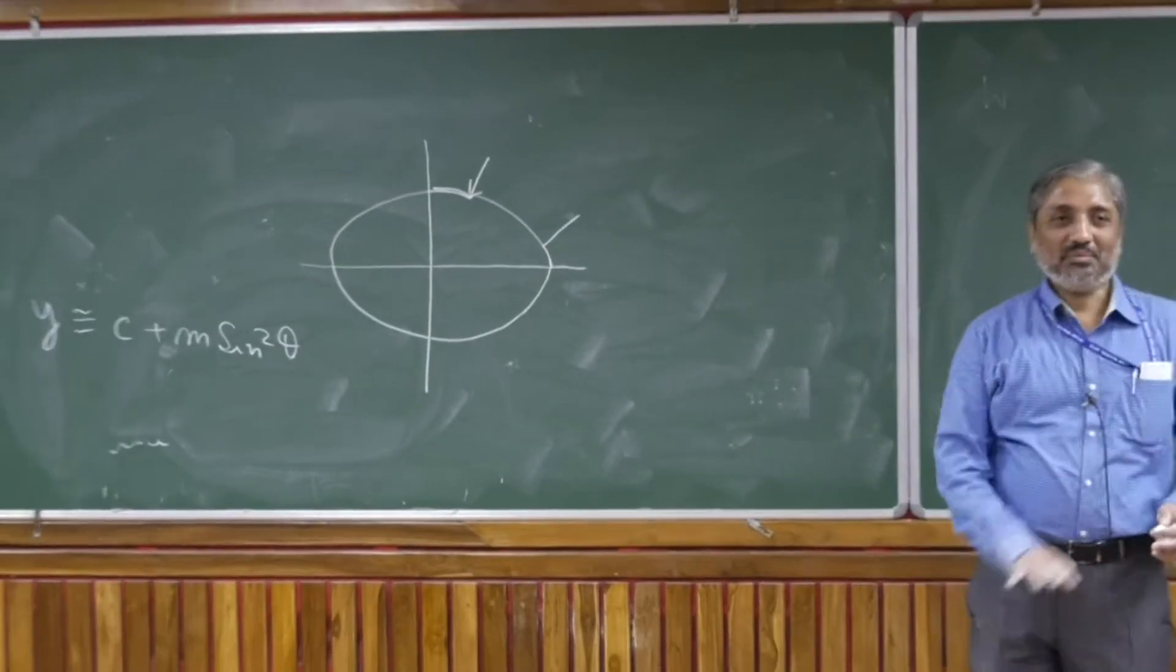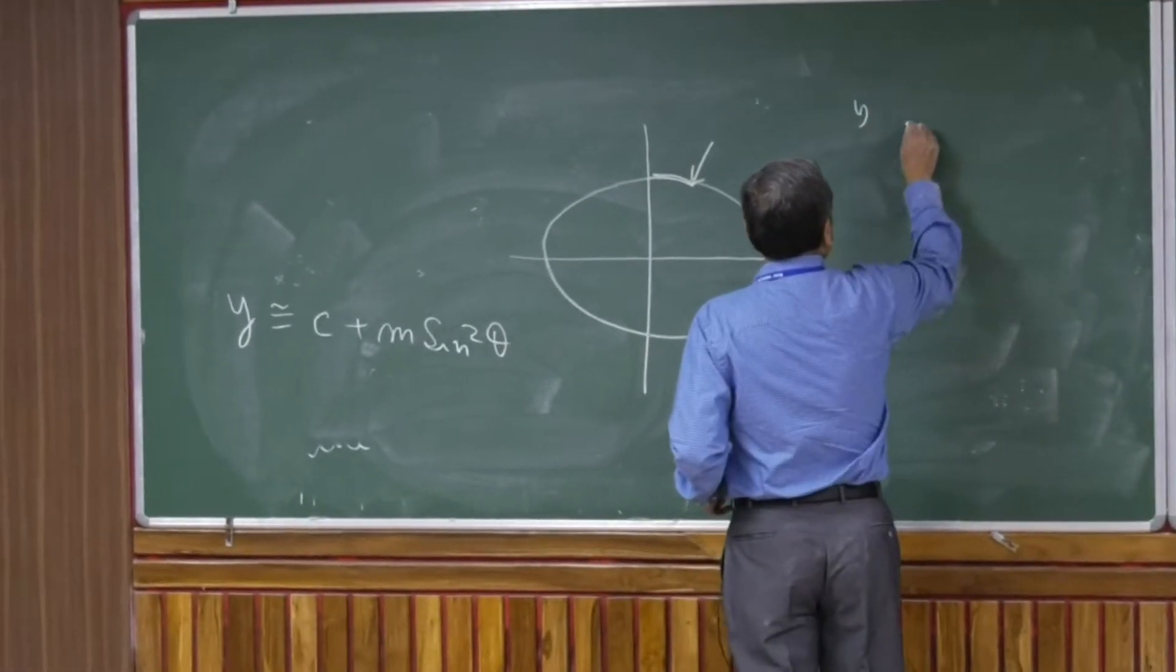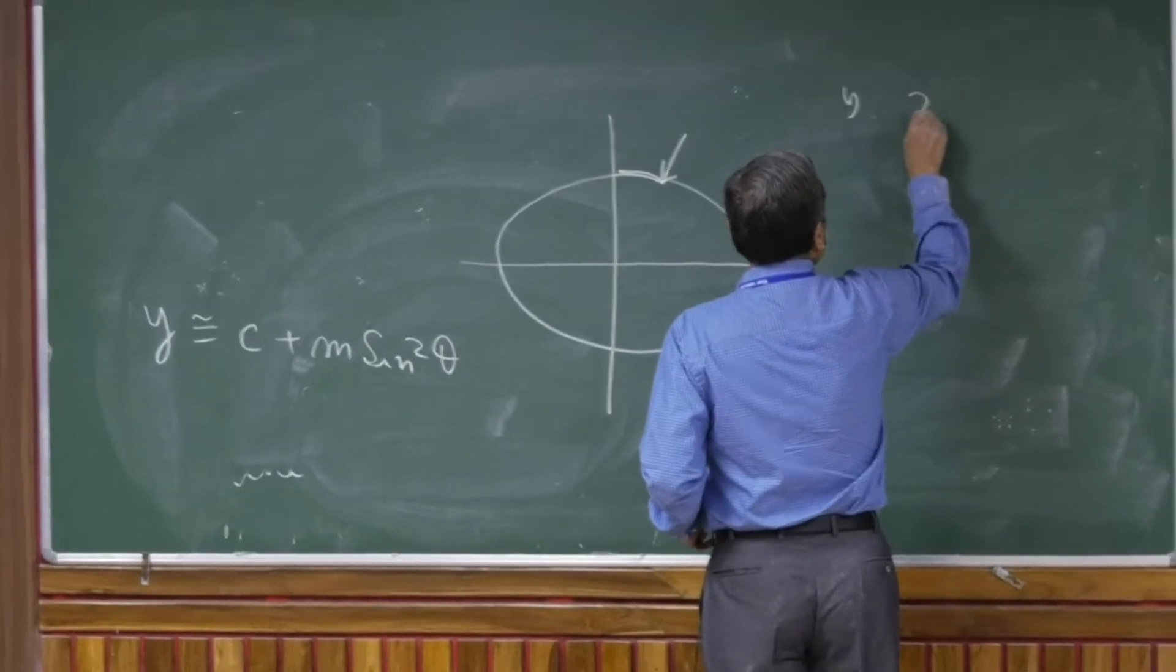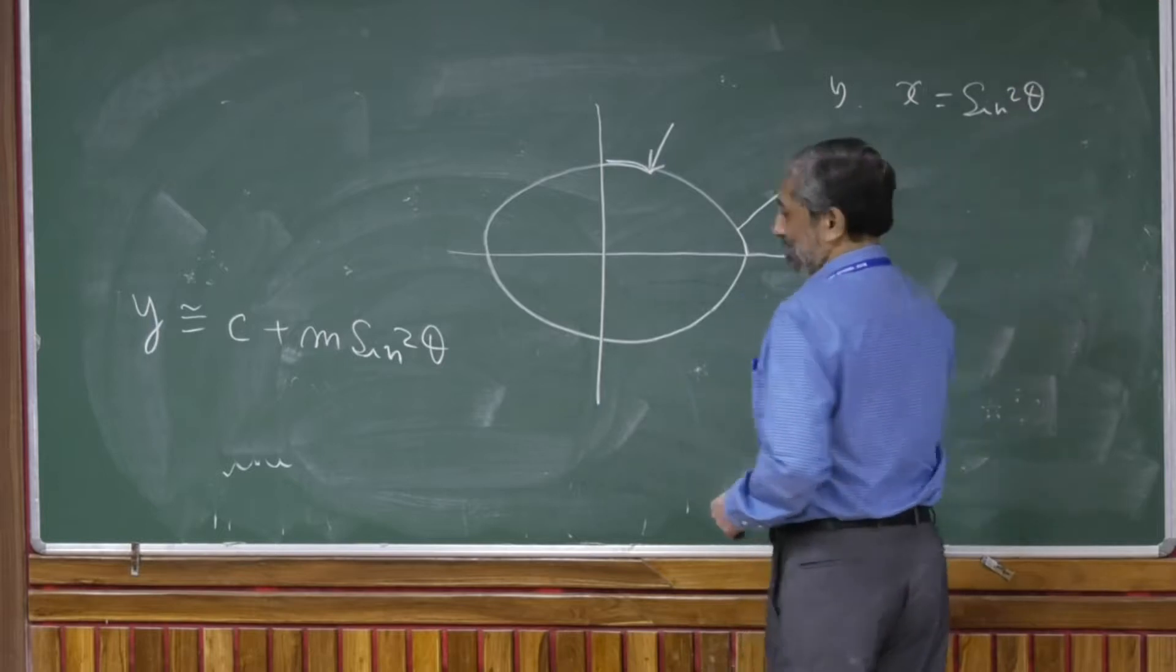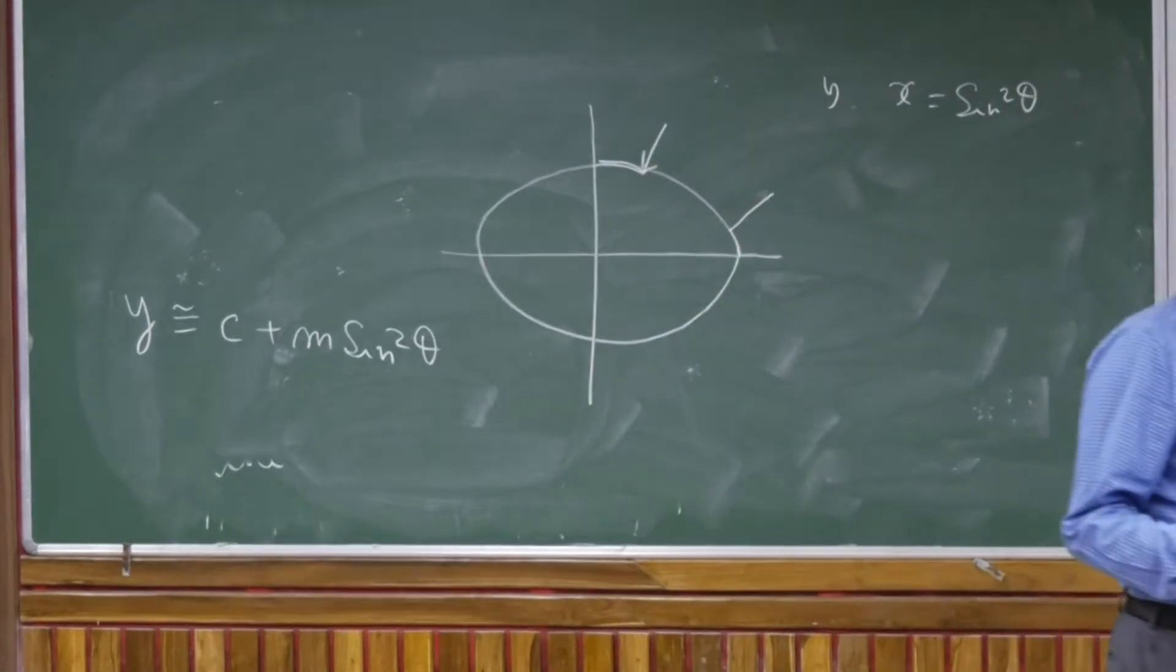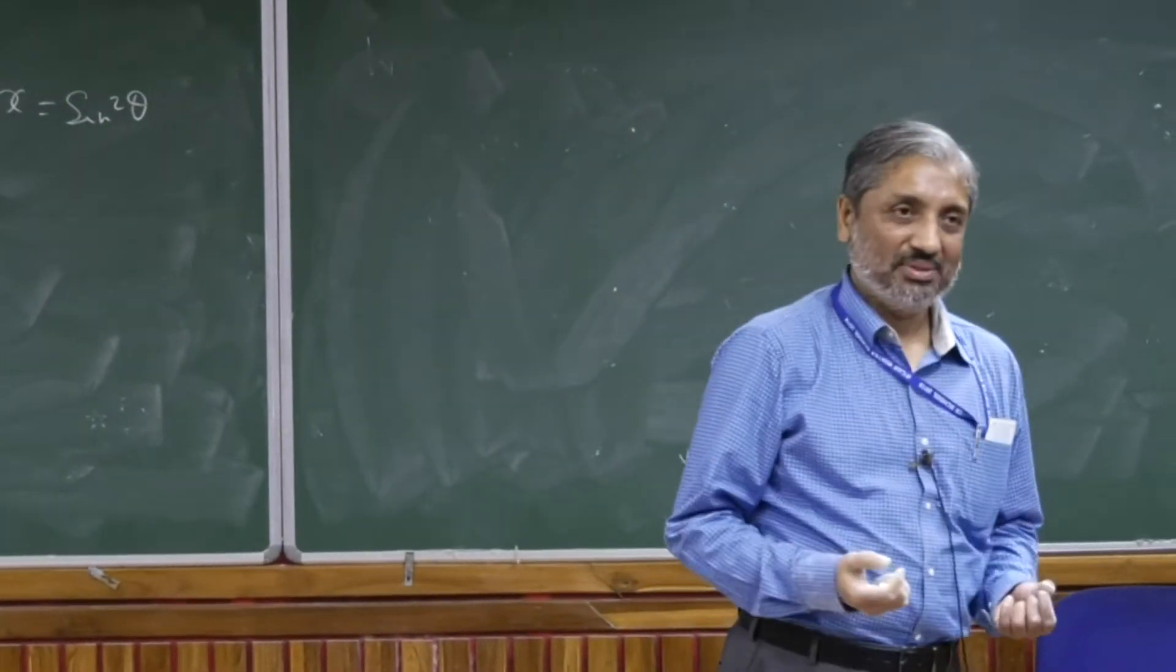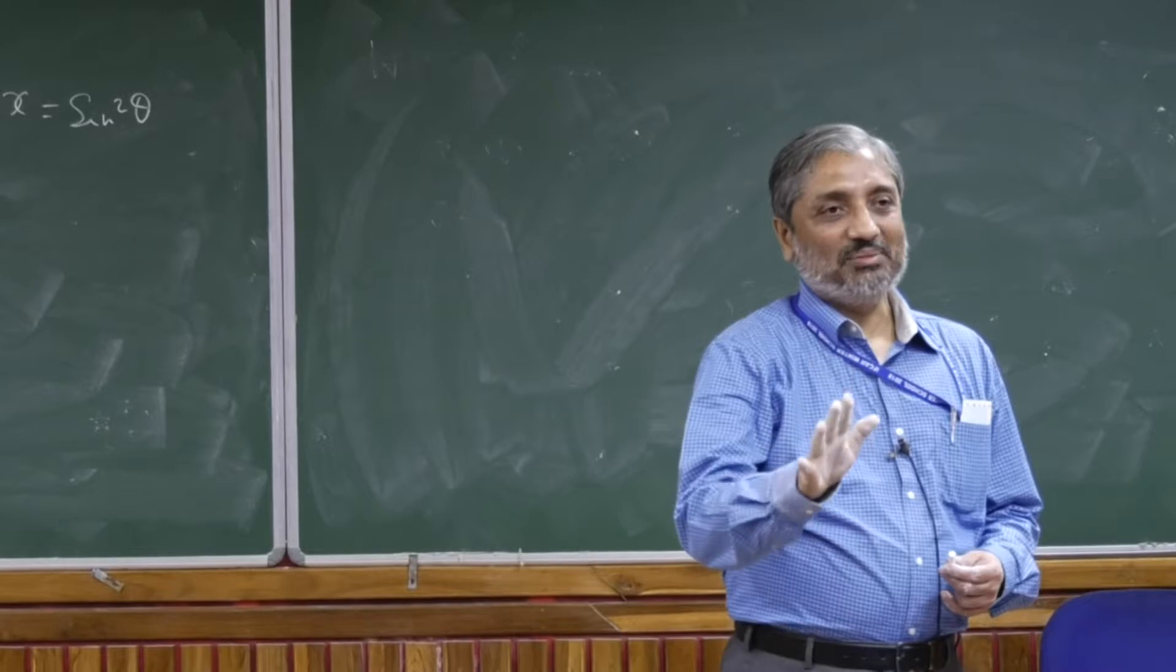And then he was looking at the data. So his data looked like his y's and the x's where x was equal to sine square theta. And then Legendre was trying to find out the value of c and m. And that is how he ended up inventing the least square.